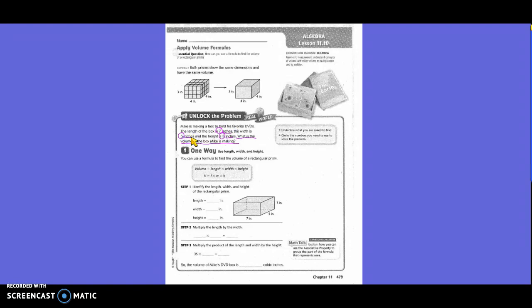You can use a formula to find the volume of a rectangular prism. We say volume equals length times width times height, or V equals L times W times H. Identify the length, width, and height of the rectangular prism. The length is 7 inches, the width is 5 inches, and the height is 3 inches.